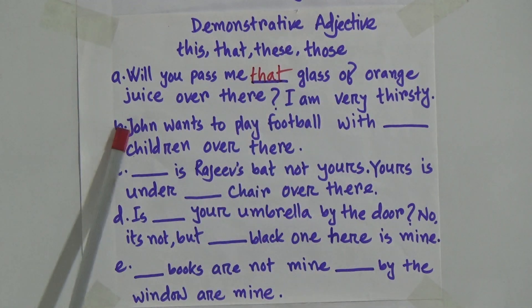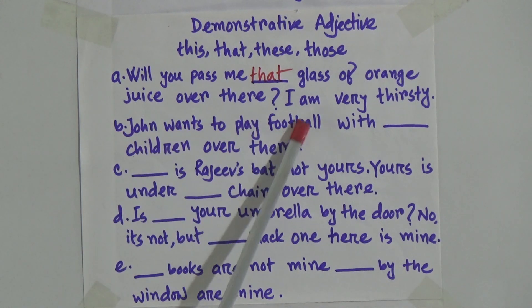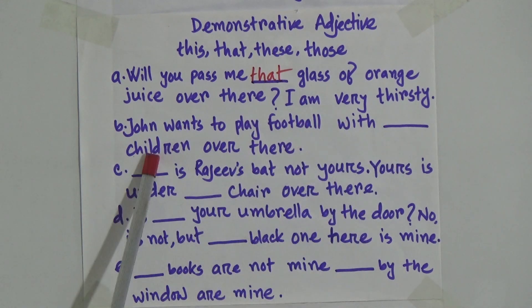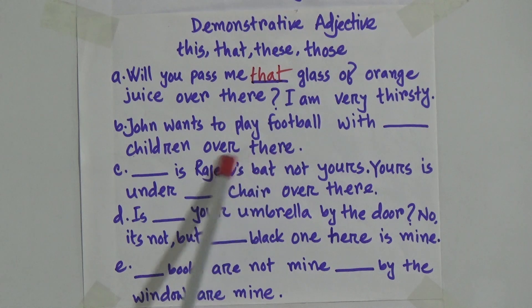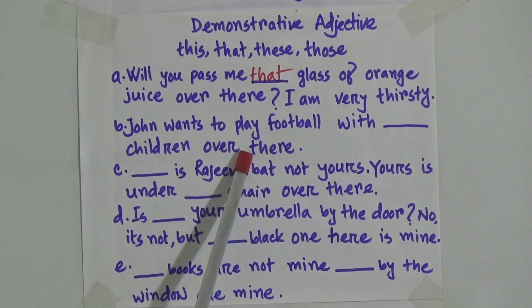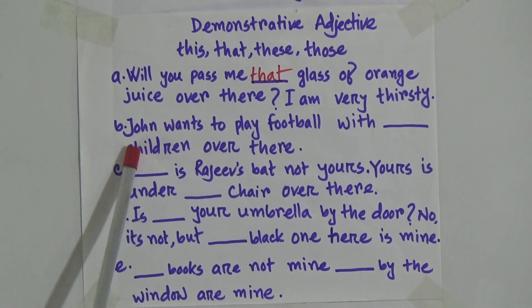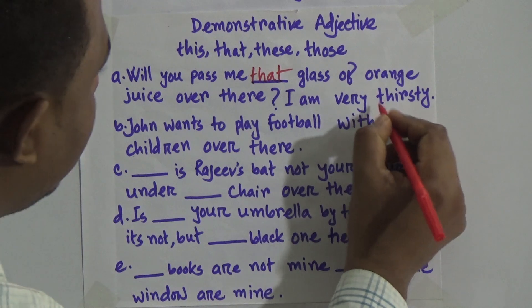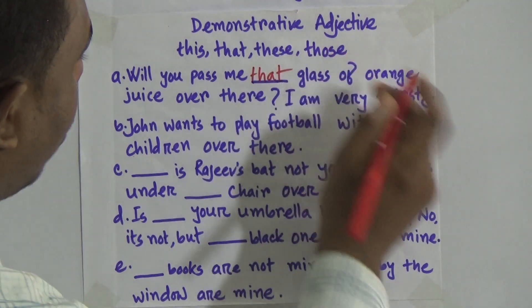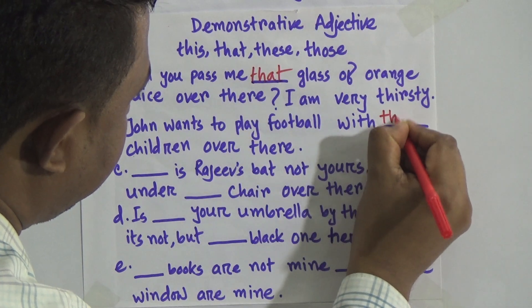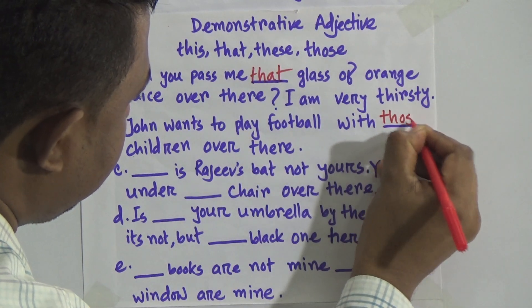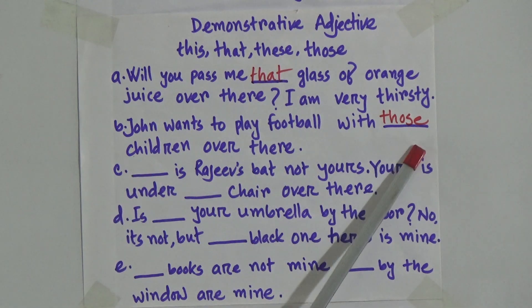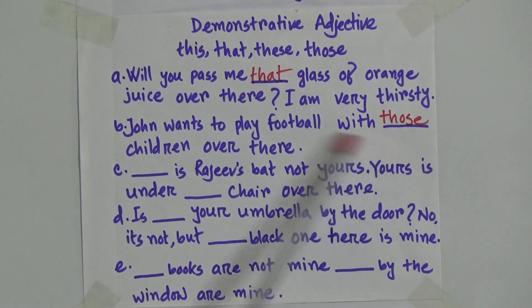Number B: John wants to play football with gap children over there. Over there means it is far away from your place. So here it would be those — those children. You know that children is plural. So here it would be those.